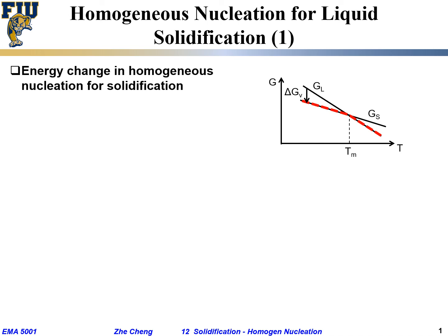Let's talk about the energy aspect for so-called homogeneous nucleation in solidification. We're dealing with the simplest type of phase transformation, going from liquid — a uniform, featureless structure — into a crystalline solid. For homogeneous nucleation, we first assume it's happening randomly but also uniformly within the liquid.